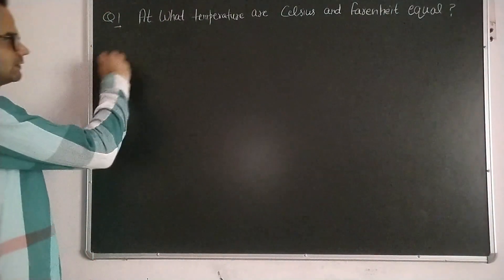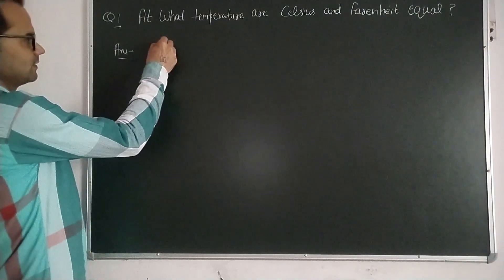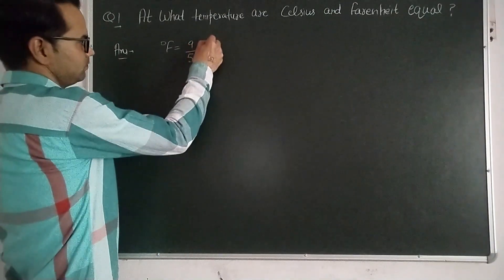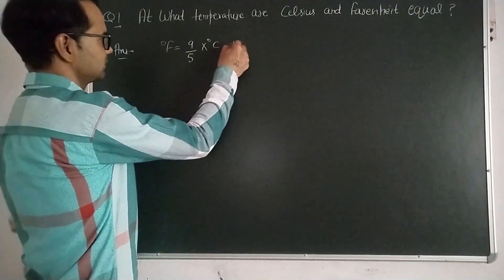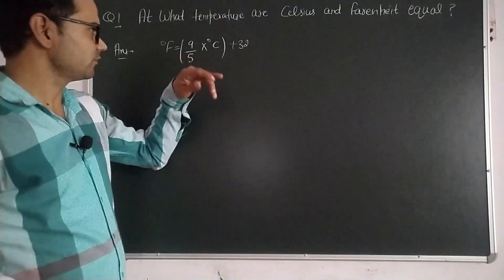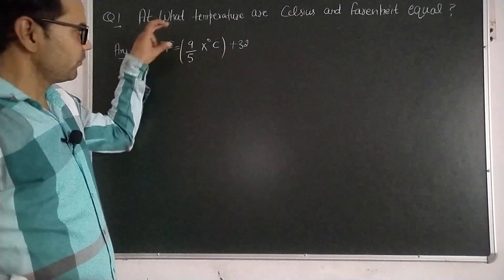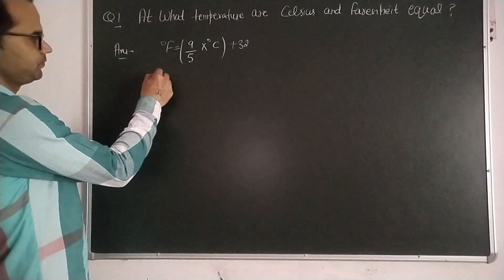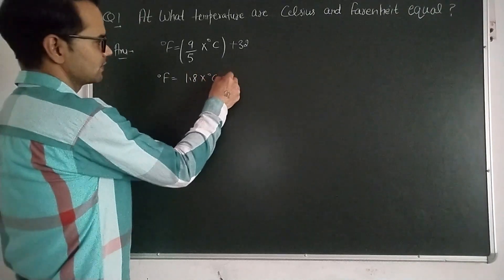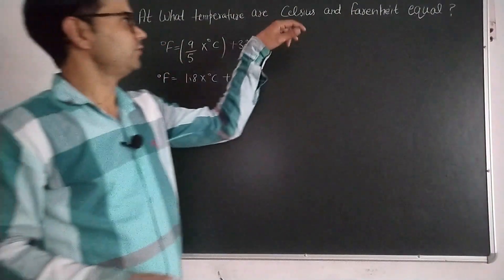To solve this, we need the formula for conversion between degree Fahrenheit and degree Celsius. The formula is: degree Fahrenheit = (9/5) × degree Celsius + 32. This is the interconversion formula. If we solve 9/5, it will be 1.8, so: degree Fahrenheit = 1.8 × degree Celsius + 32.